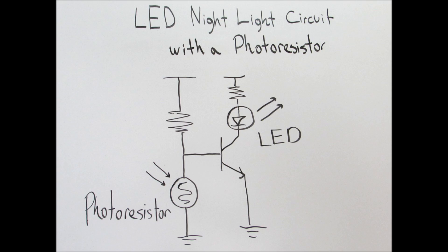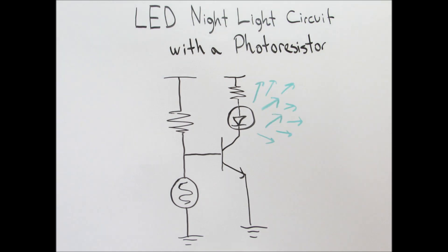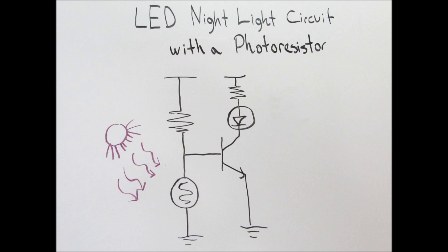The main feature of this circuit is that when the photoresistor is not exposed to light, the LED is on. Conversely, when the photoresistor is exposed to light, the LED is off.